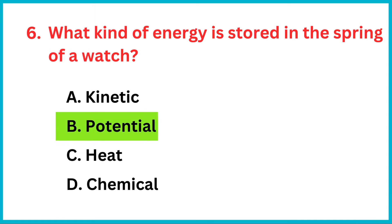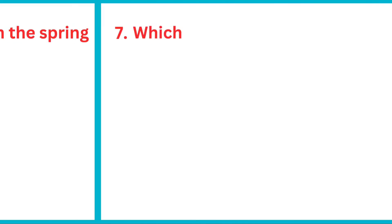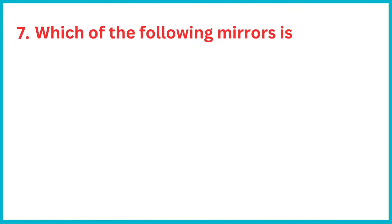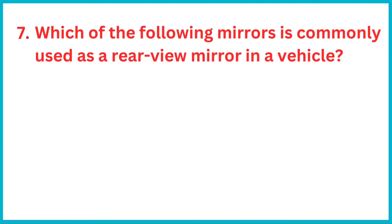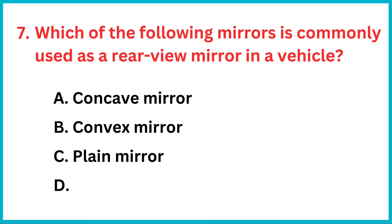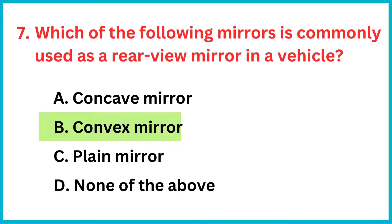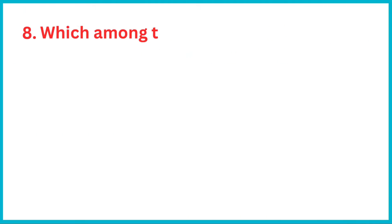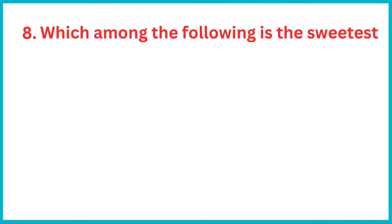What kind of energy is stored in the spring of a watch? The correct answer is option B: potential energy. Which of the following mirrors is commonly used as a rear-view mirror in a vehicle? The correct answer is option B: convex mirror.